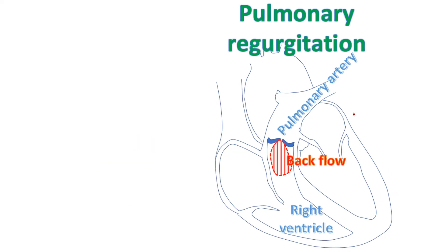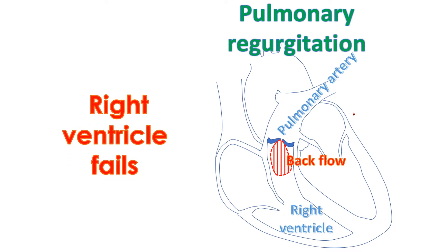Mild and moderate pulmonary regurgitation is usually left alone as they do not cause much problem to the person, but observation is needed to check whether the leak is increasing. Very severe leak can produce progressive enlargement of the right ventricle, which can fail in the long run.